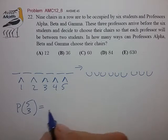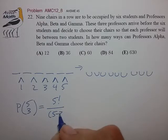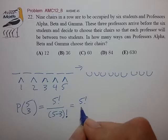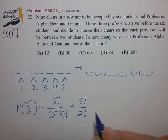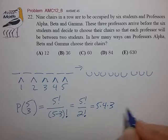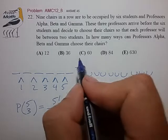And from our permutation math, that works out to 5 factorial divided by 5 minus 3 factorial, which is equal to 5 factorial over 2 factorial. And that is 5 times 4 times 3, which is 60. Answer C.